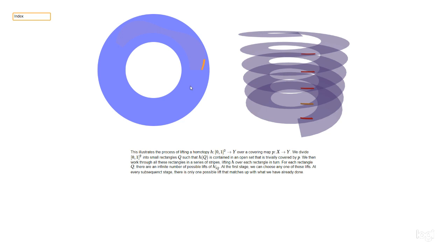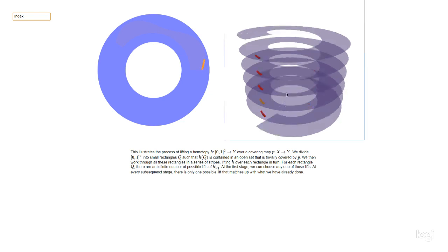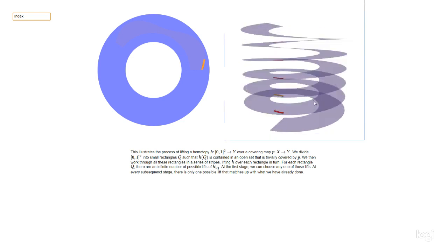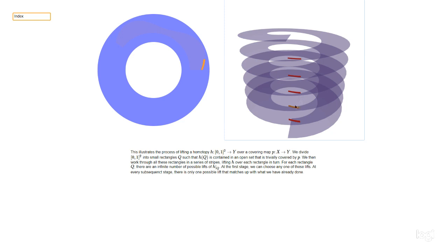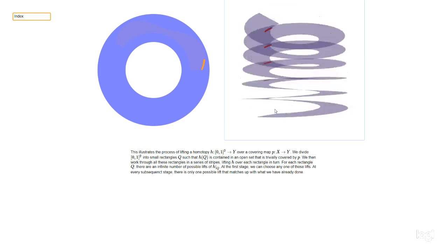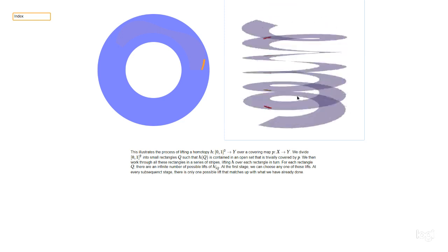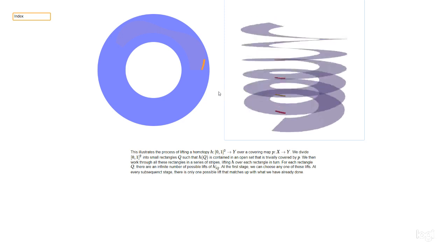The idea is to lift this whole homotopy up to a map from the unit square into the helix. If we take a small section of the square, we can do it because it's a covering map — the part of the helix lying above a little rectangle is just a bunch of disjoint copies of that rectangle, and we can pick any one of them to use as a lift.